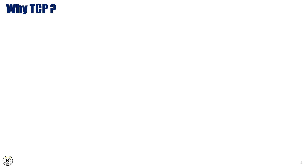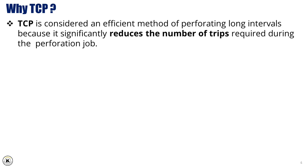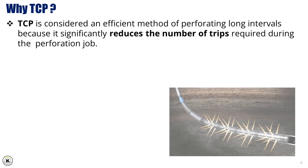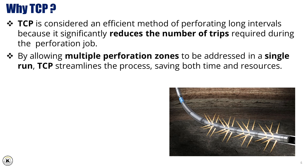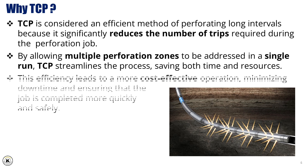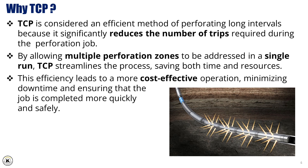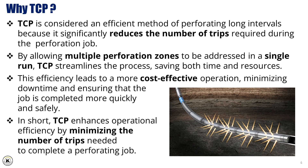Why choose TCP? TCP is considered an efficient method for perforating long intervals because it significantly reduces the number of trips required during the perforation job. By allowing multiple perforation zones to be addressed in a single run, TCP streamlines the process, saving both time and resources. This efficiency leads to a more cost-effective operation, minimizing downtime and ensuring that the job is completed more quickly and safely. In short, TCP enhances operational efficiency by minimizing the number of trips needed to complete a perforating job.